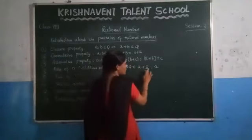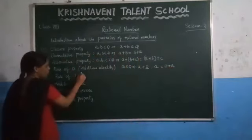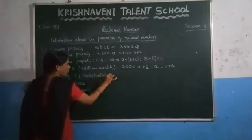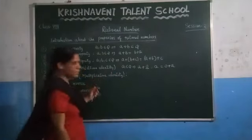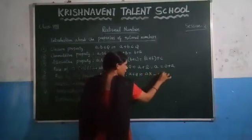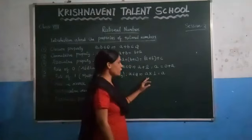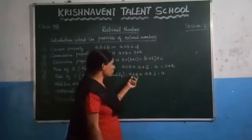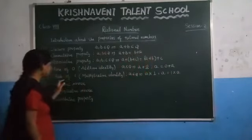If a belongs to Q, then a plus zero is equal to a, which must be equal to zero plus a. The next property is the role of one. We call this one the multiplicative identity. If you consider any rational number, you have to multiply one number such that you get the same result. You have to multiply by one. That one we call the multiplicative identity. If a belongs to Q, then a into 1 is equal to a, which we can also write as 1 into a. That property we call the role of one.